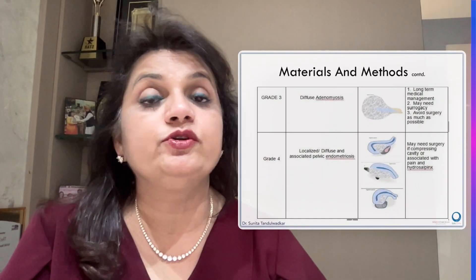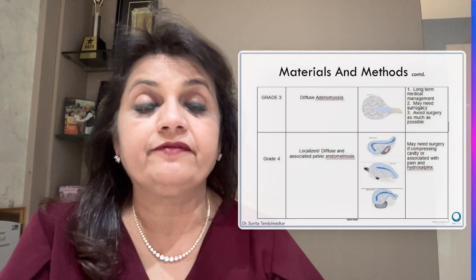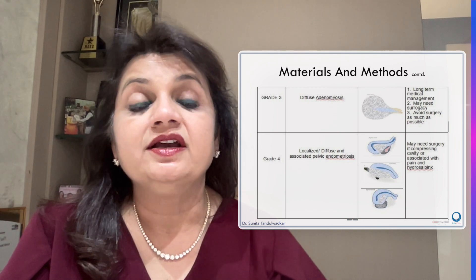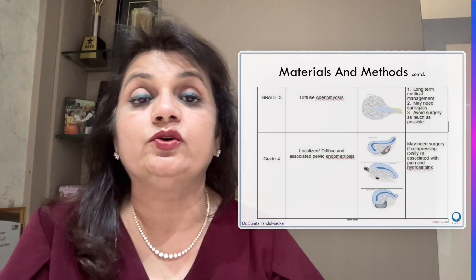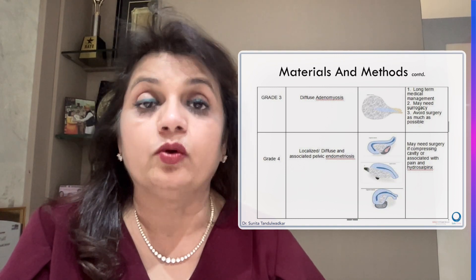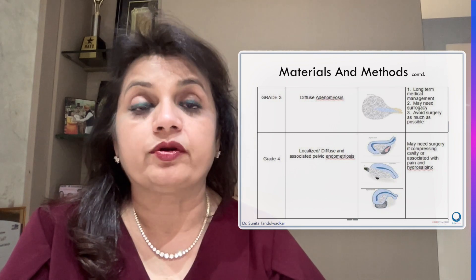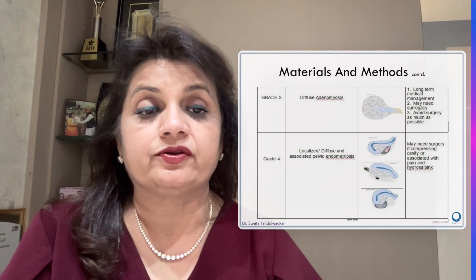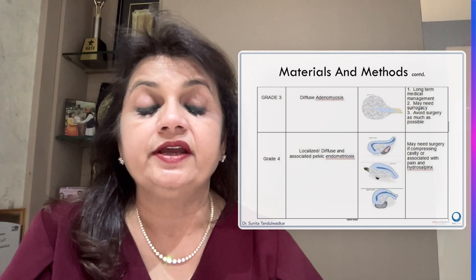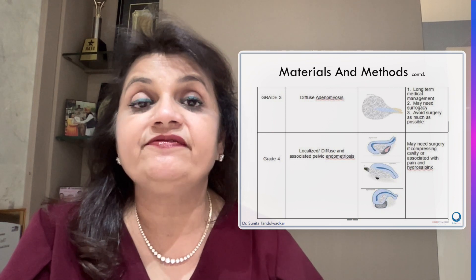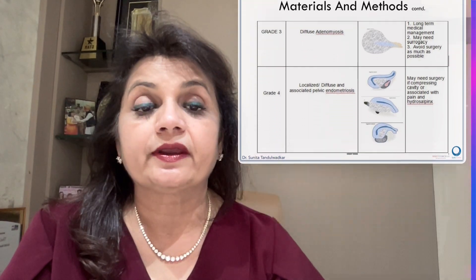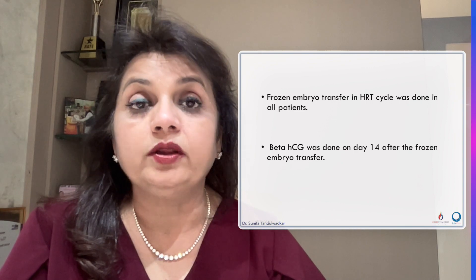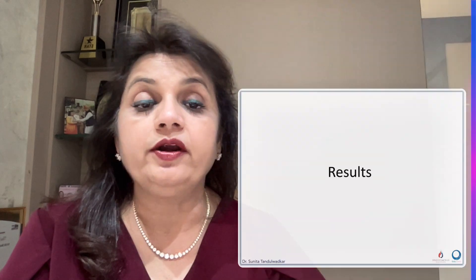Grade 3 is diffuse adenomyosis — we all know there is no surgical treatment for diffuse adenomyosis. The only option is to try with medical treatment, but if it is a severe diffuse adenomyosis making the uterus up to 20 weeks size, surrogacy probably becomes an option. Grade 4 may be localized or diffuse adenomyoma but associated with pelvic endometriosis. These patients may also need surgery, especially if associated with severe pain or hydrosalpinx.